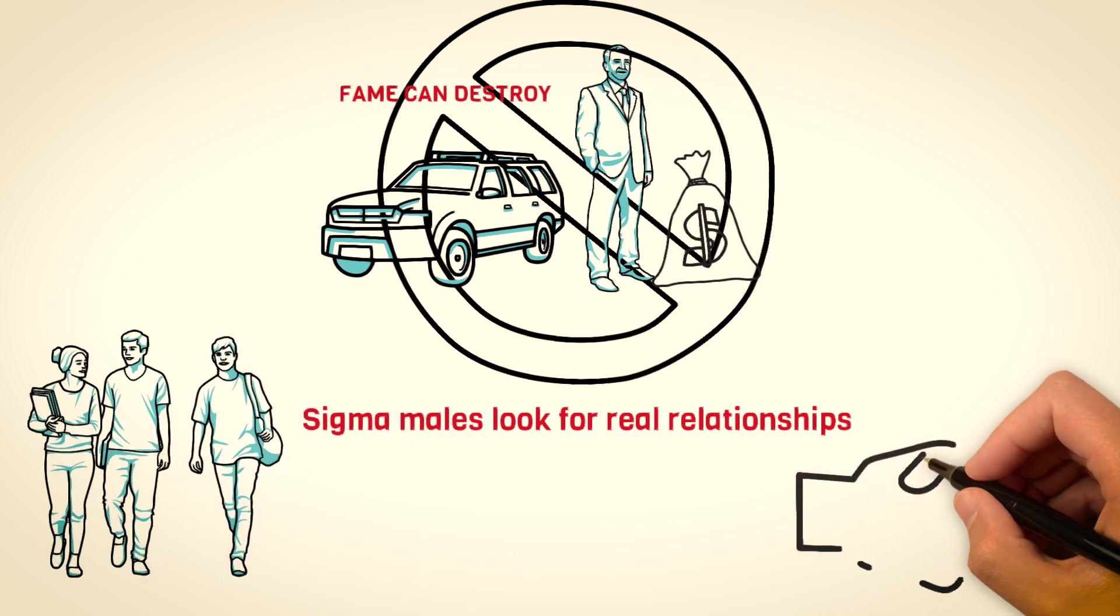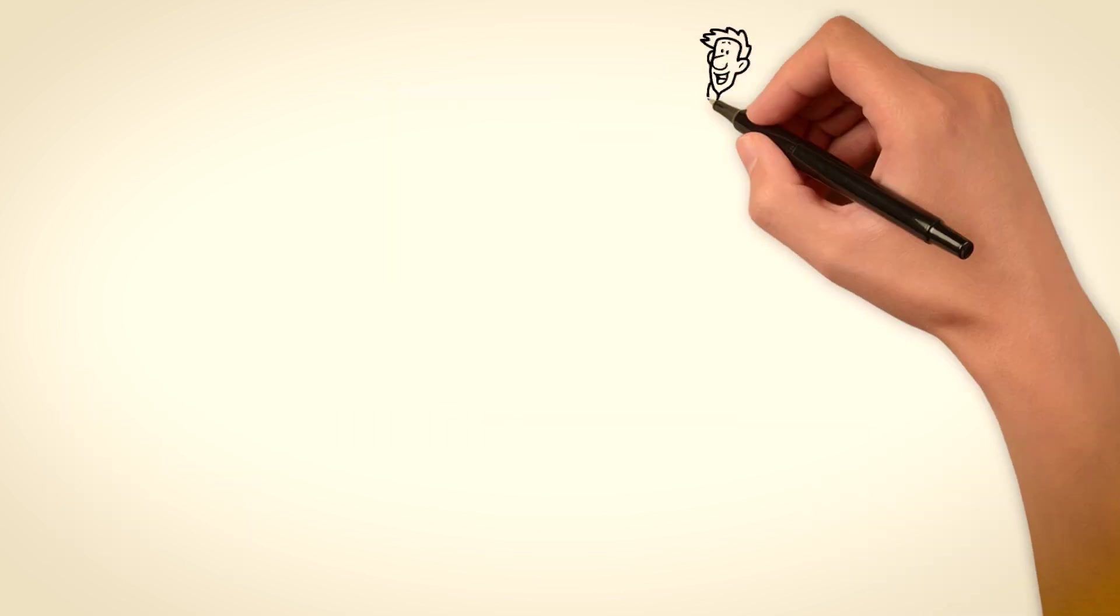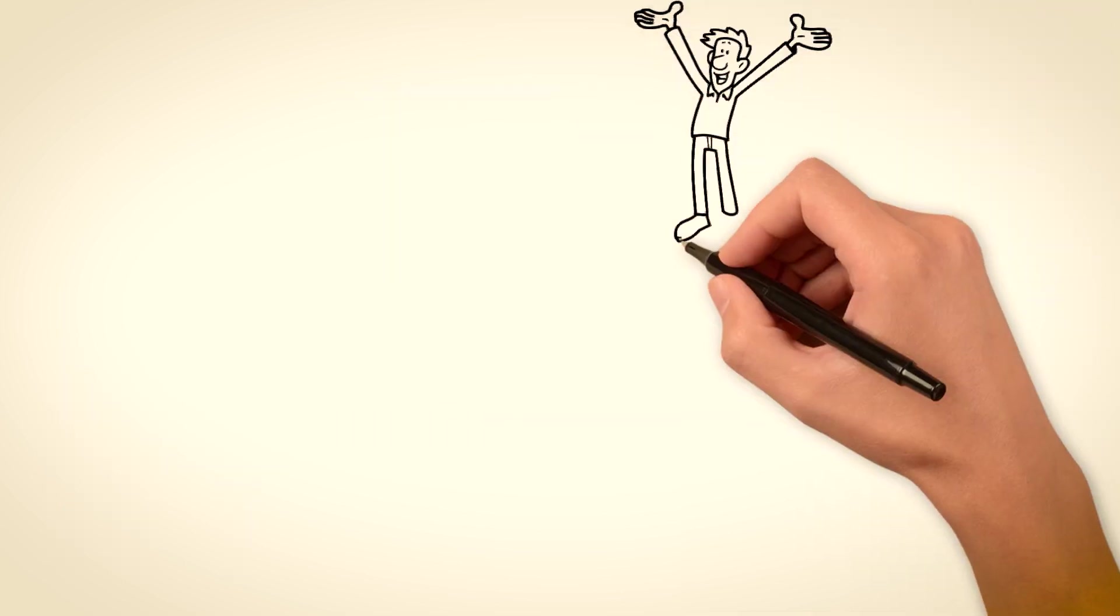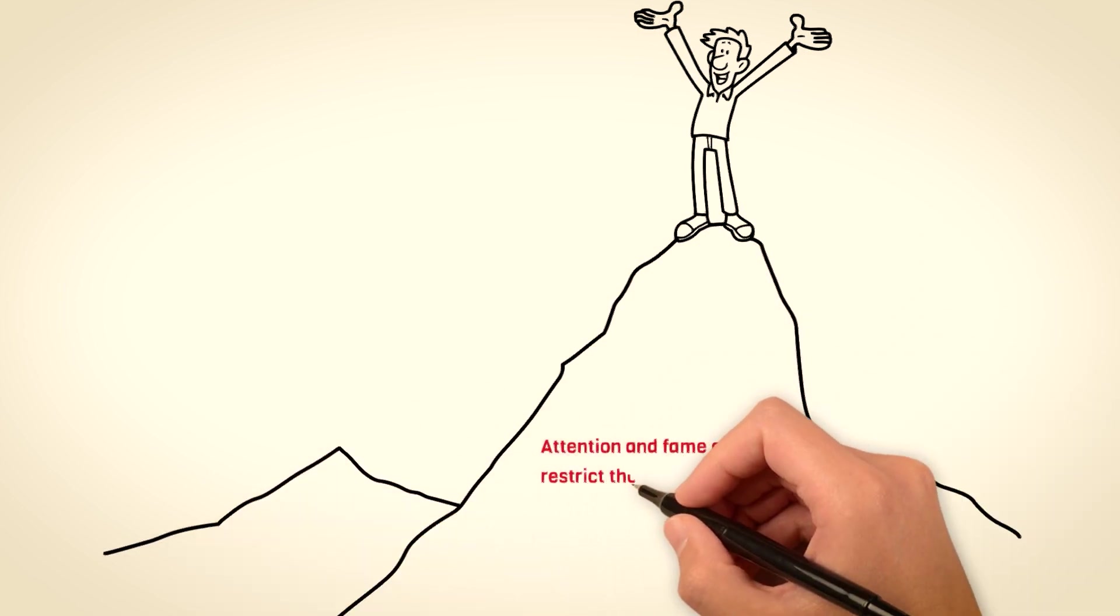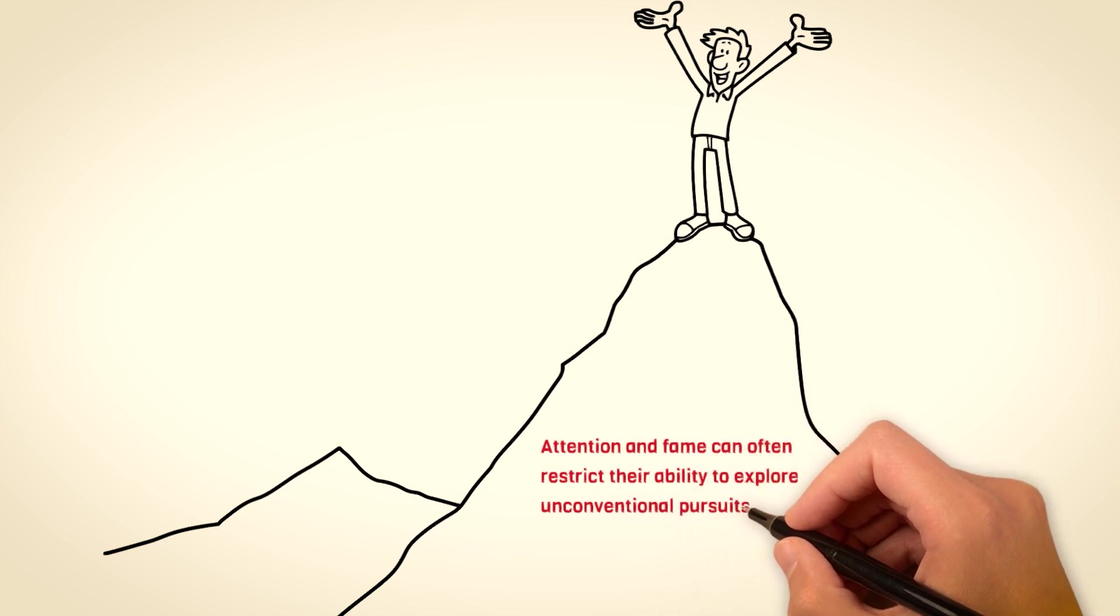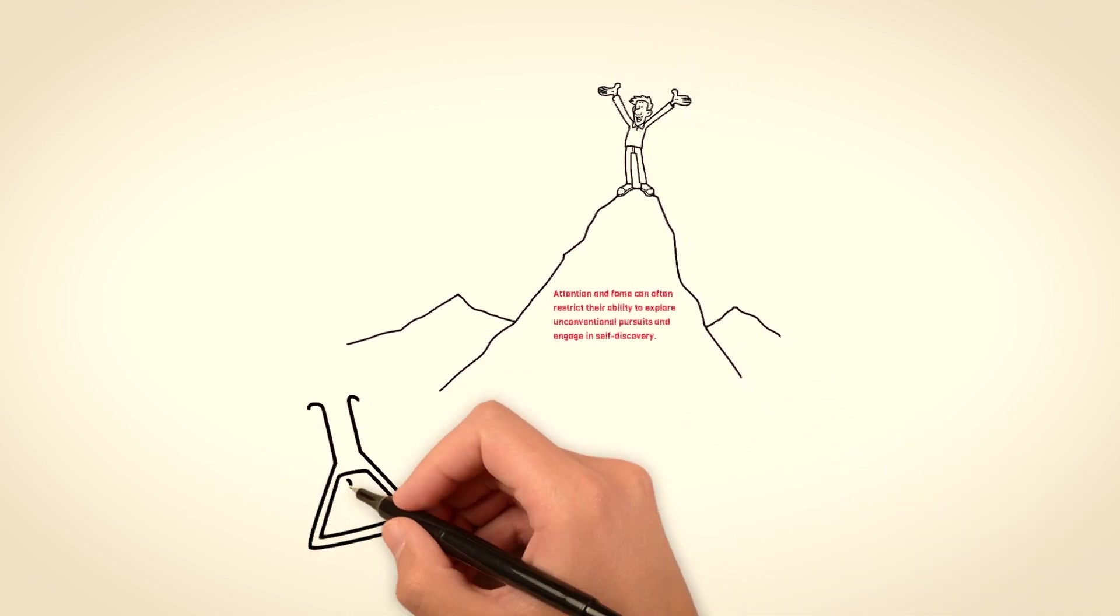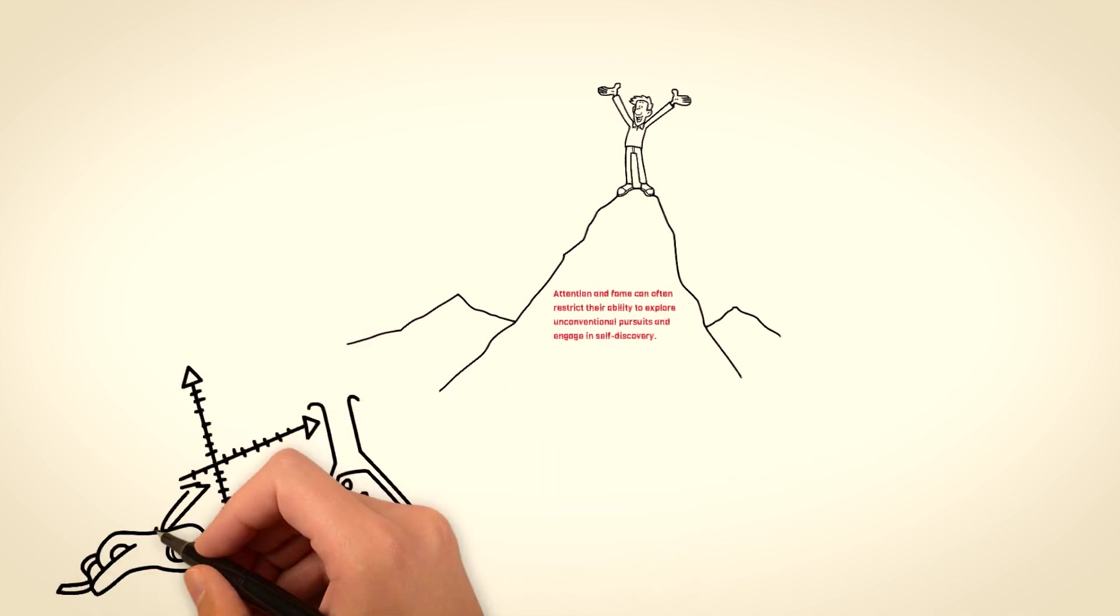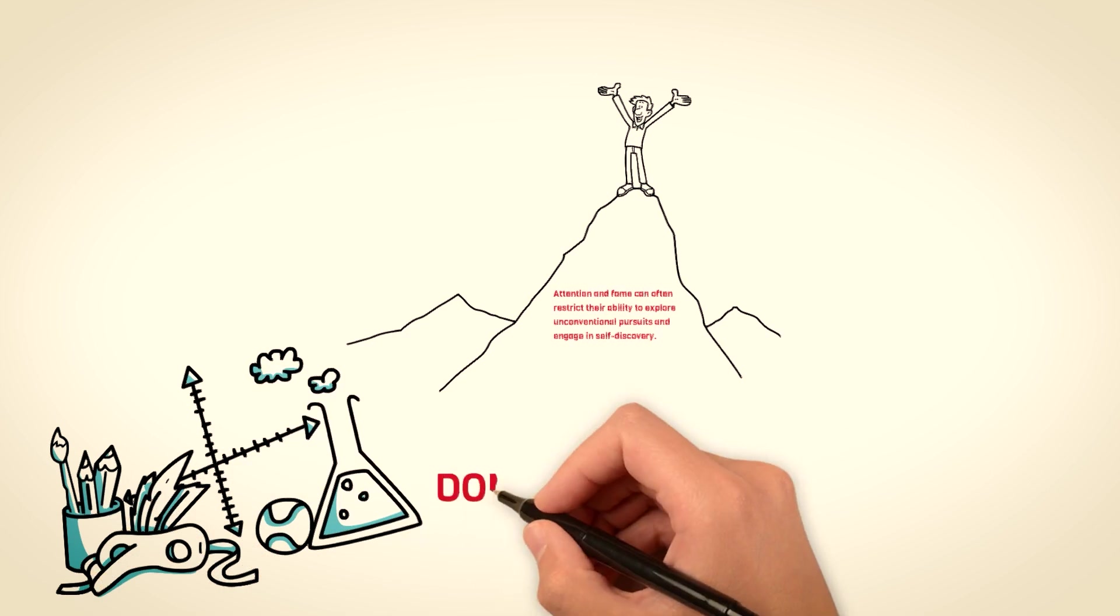The pressures and expectations that come with fame can also lead to a loss of personal freedom. Sigma males thrive in their ability to march to the beat of their own drum and pursue their passions and interests. Attention and fame can often restrict their ability to explore unconventional pursuits and engage in self-discovery. They value the freedom to experiment, make mistakes, and carve their unique path in life without being confined to societal expectations.